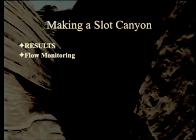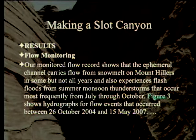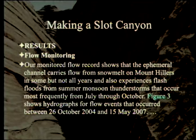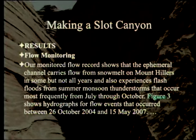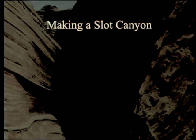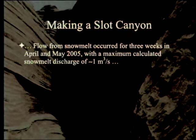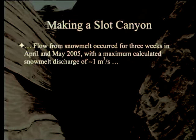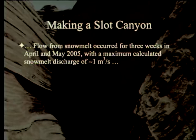Flow monitoring shows that the ephemeral channel carries flow from snowmelt on Mount Hillers in some but not all years, and also experiences flash floods from summer monsoon thunderstorms occurring most frequently from July through October. The hydrographs cover flow events between October 2004 and May 2007 — about a three-year span. Snowmelt flow occurred for three weeks in April and May of 2005, with a maximum calculated snowmelt discharge of approximately one cubic meter per second.